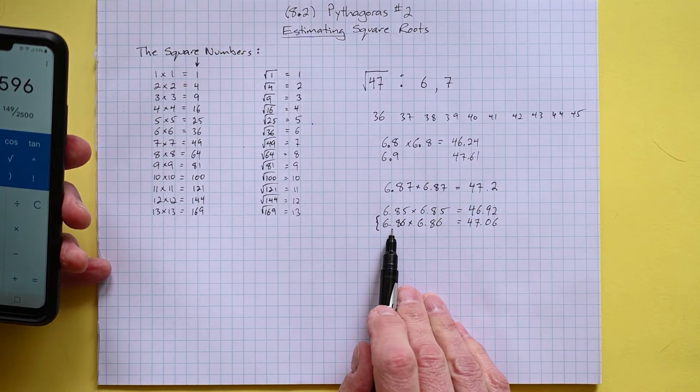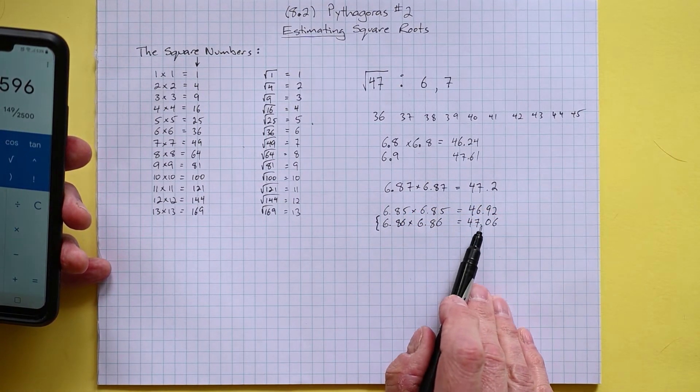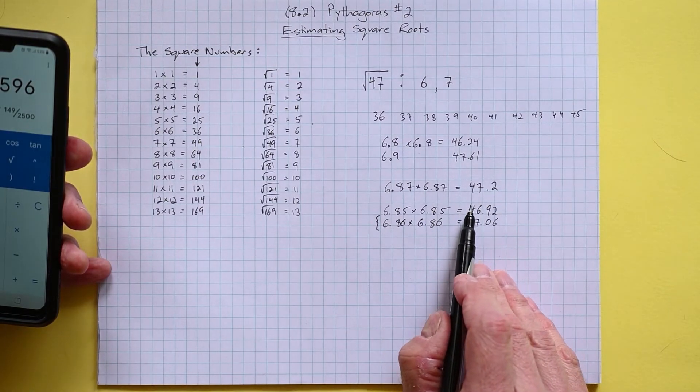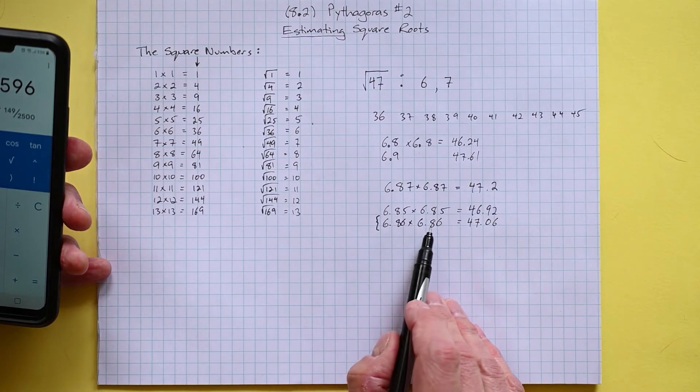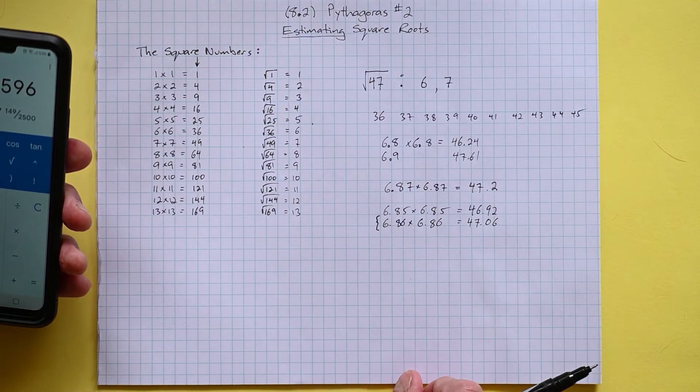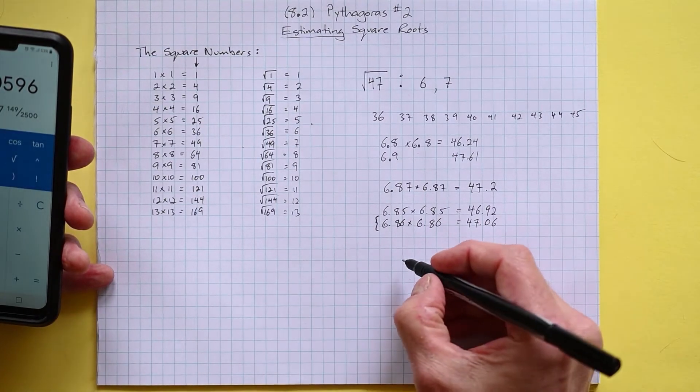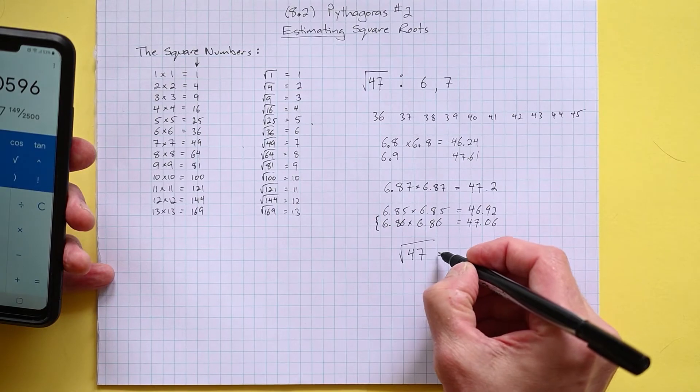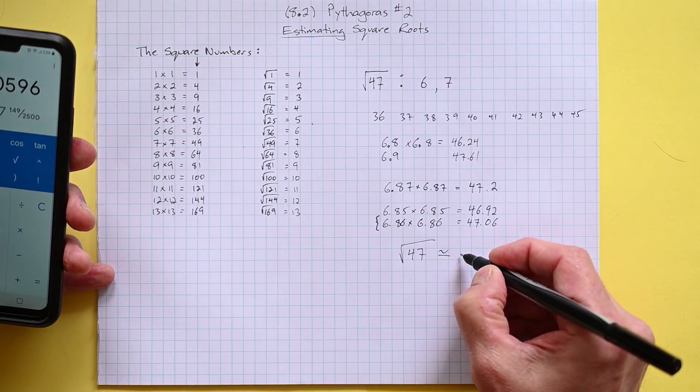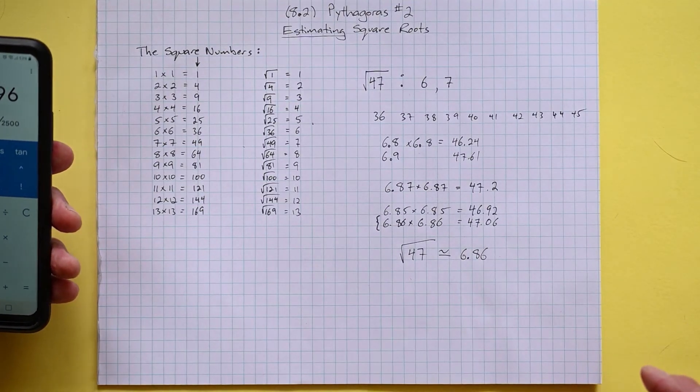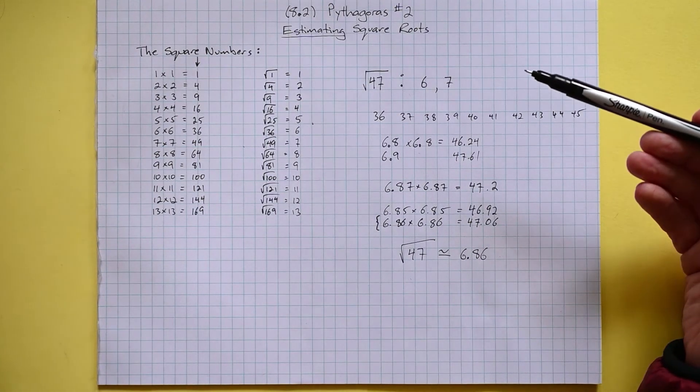And we know if we go any higher than this, we move further away from 47. If we go any lower, we move further from 47. And so this is our best estimate to two decimal places. So we can now say that the square root of 47 is approximately equal to 6.86. Feel free to rewind and follow through that process again if you need to.